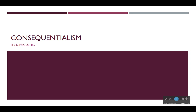The title of this chapter is 'Consequentialism: Its Difficulties,' so last time we looked at its nature and attractions. Schaefer Landau points out that consequentialism is a broad term referring to any normative theory according to which the rightness or wrongness of an action is determined by its consequences. He then focuses specifically on utilitarianism as one version of consequentialism.